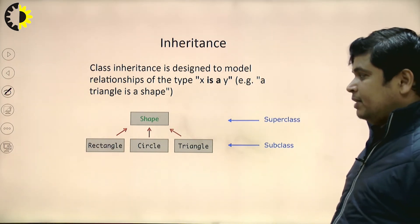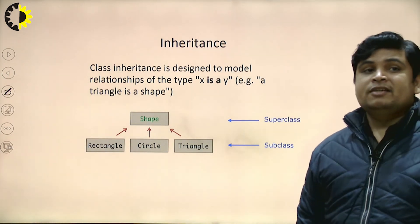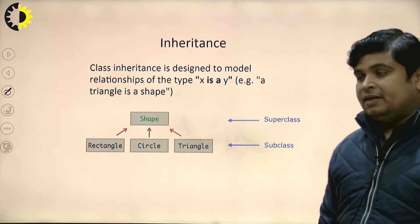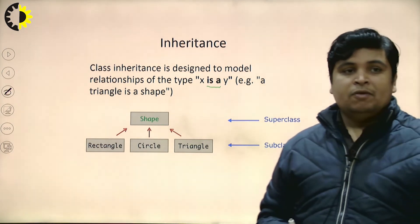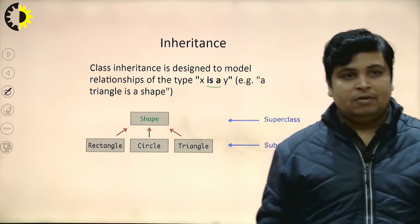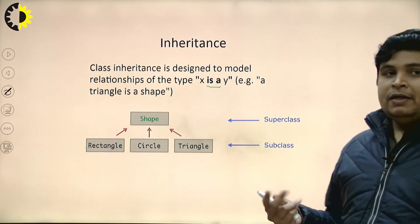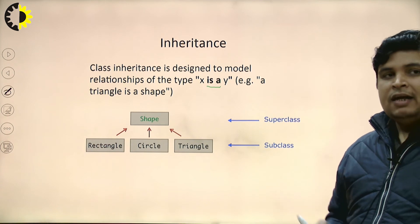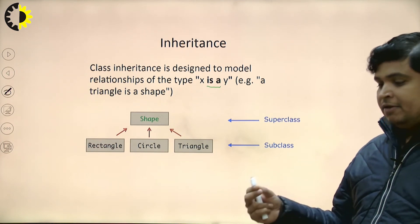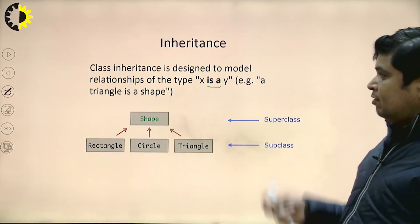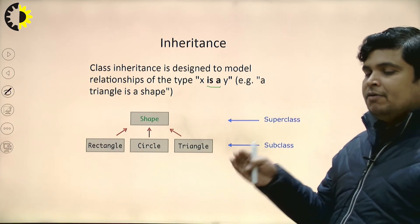Now, it is a very important concept in object-oriented programming: Inheritance. Basically, class inheritance is designed to model a relationship of the type 'X is a Y' — inheritance is always known as an is-a relationship. We can say is-a relationship and inheritance are the same terminology. If one class acquires the property of another class, then we can say the class has an is-a relationship with the inherited class. Inheritance is the concept by which one class object can access the property of another class.